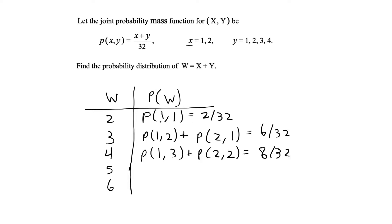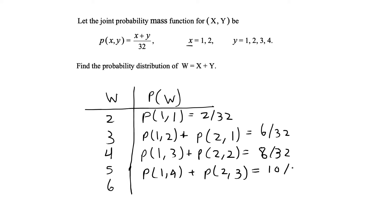w can take on the value 5 when x=1 and y=4, plus when x=2 and y=3. Summing those gives 5/32 plus 5/32, so P(W=5) = 10/32.